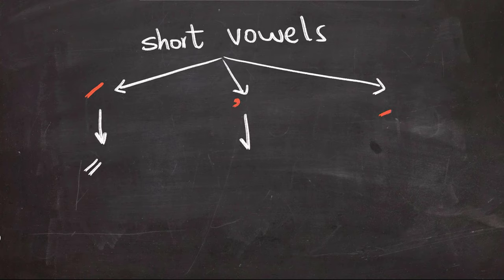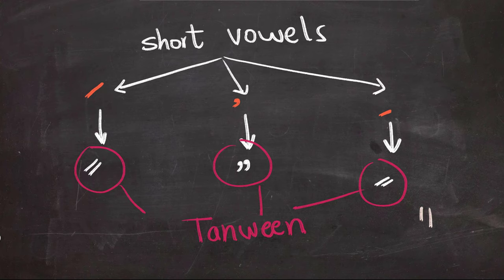Today we're going to talk about the possibility of doubling these short vowels to produce a new sound. This phenomenon is called Tanween.